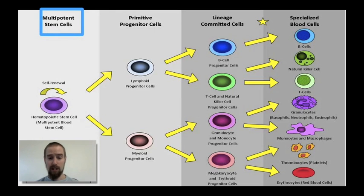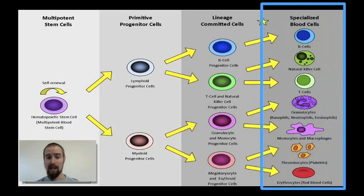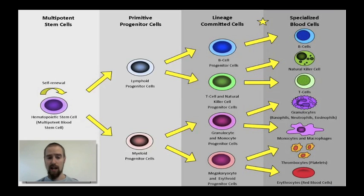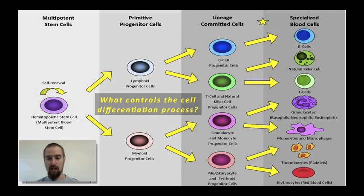For example, a multipotent stem cell might be devoted to the blood cell lineage. This cell has the potential to become any kind of blood cell — white blood cells, red blood cells, platelet cells, or cells of the immune system like B cells and T cells. However, these cells will never become muscle cells or nerve cells because they have already differentiated beyond their ability to become those kinds of cells. So this is cell differentiation, by which undifferentiated stem cells become more and more specialized.